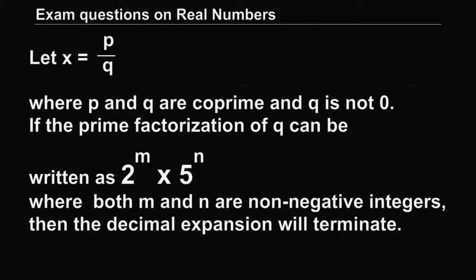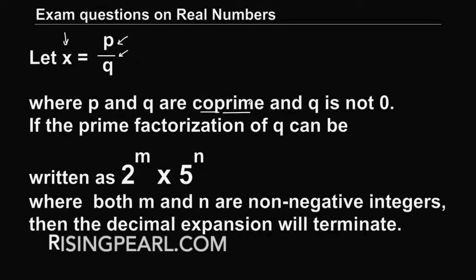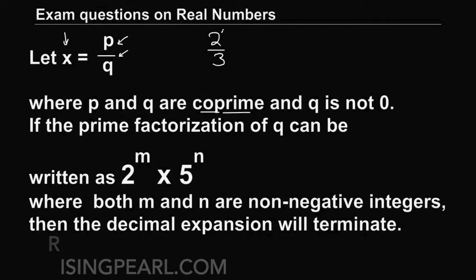Let's answer the first part: whether the decimal expansion will terminate or not. We have a rational number x expressed in the form p by q such that p and q are co-prime. What is co-prime? For example, 2 by 3 is a rational number. Do 2 and 3 share any common factor? No. So we say they are co-prime.